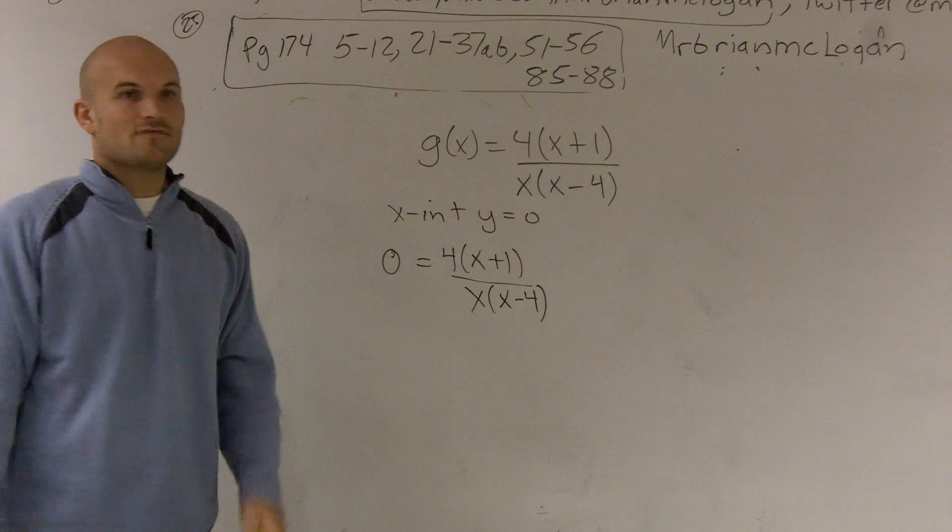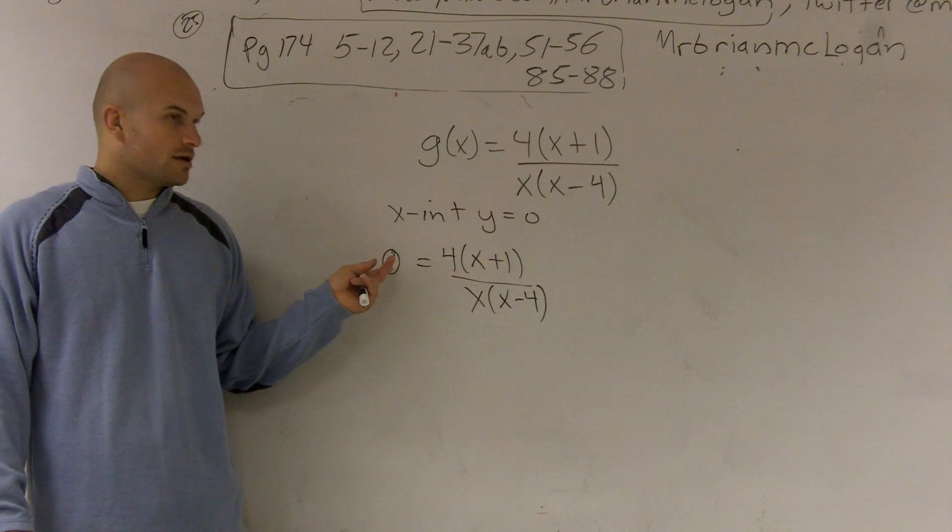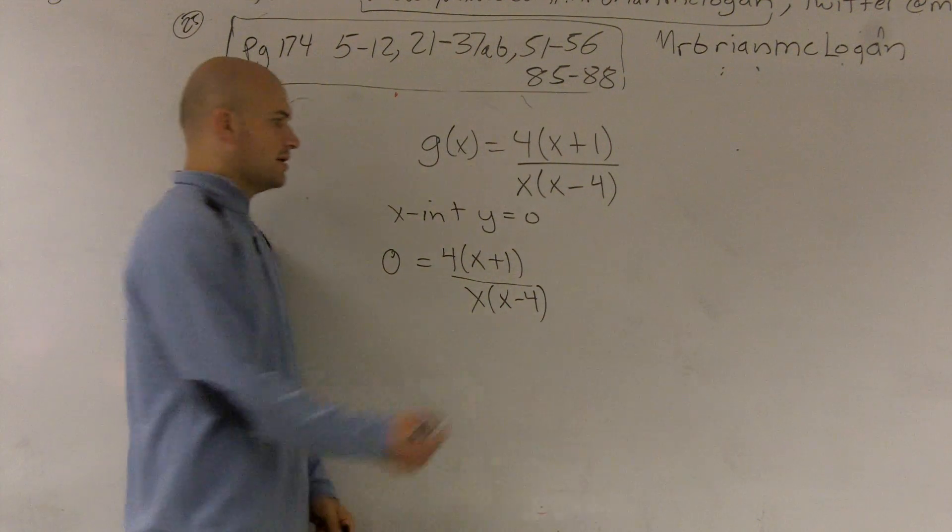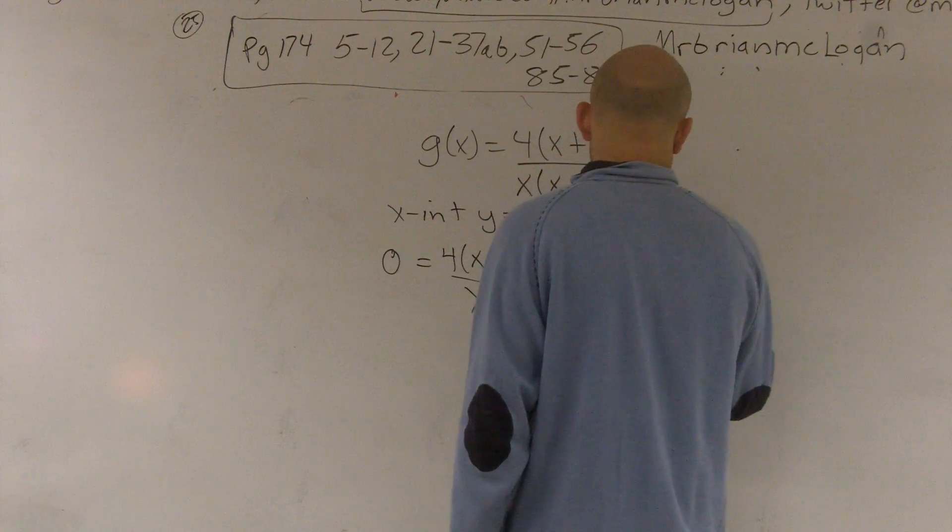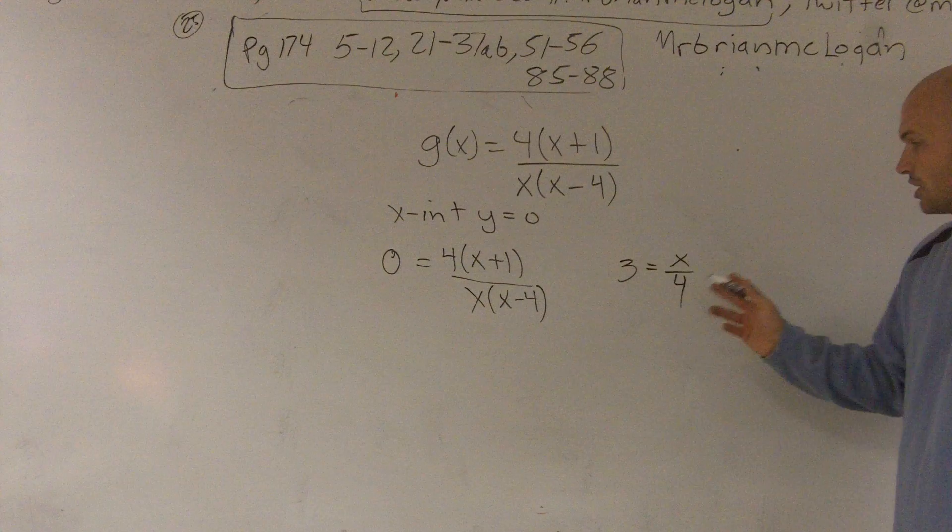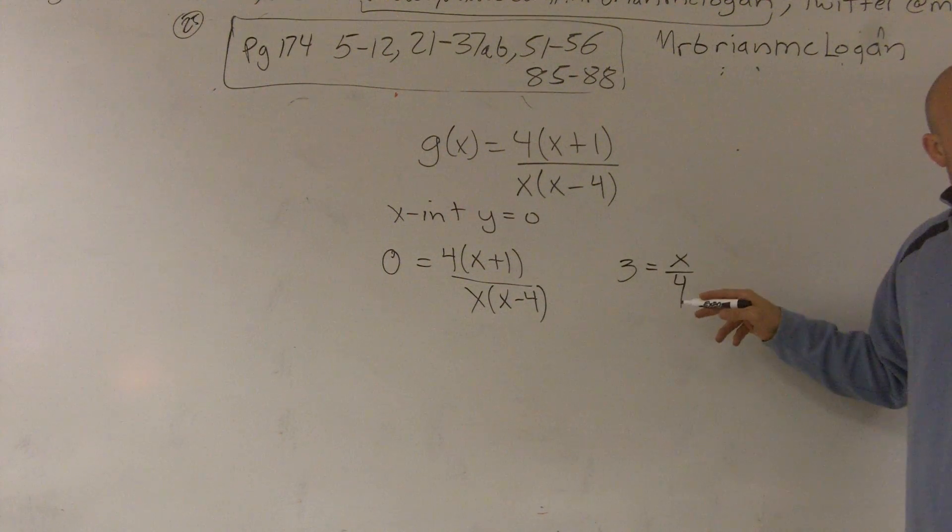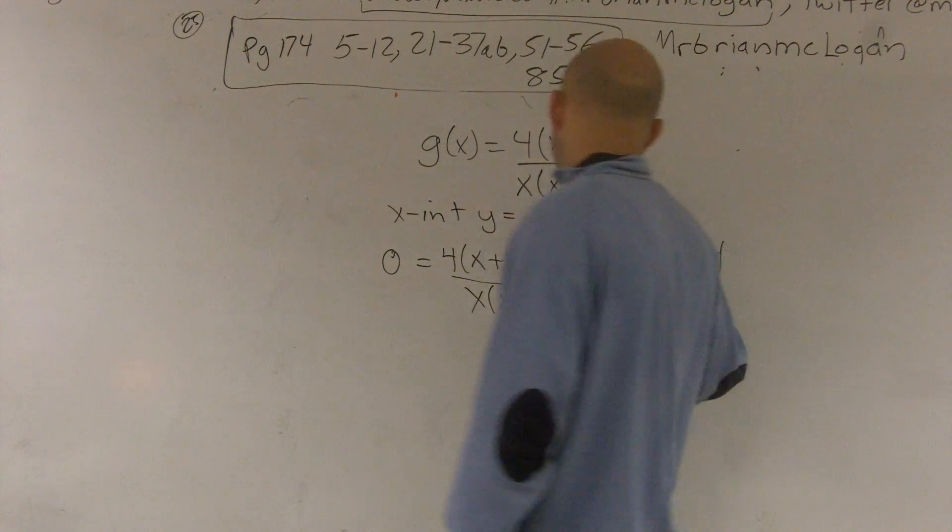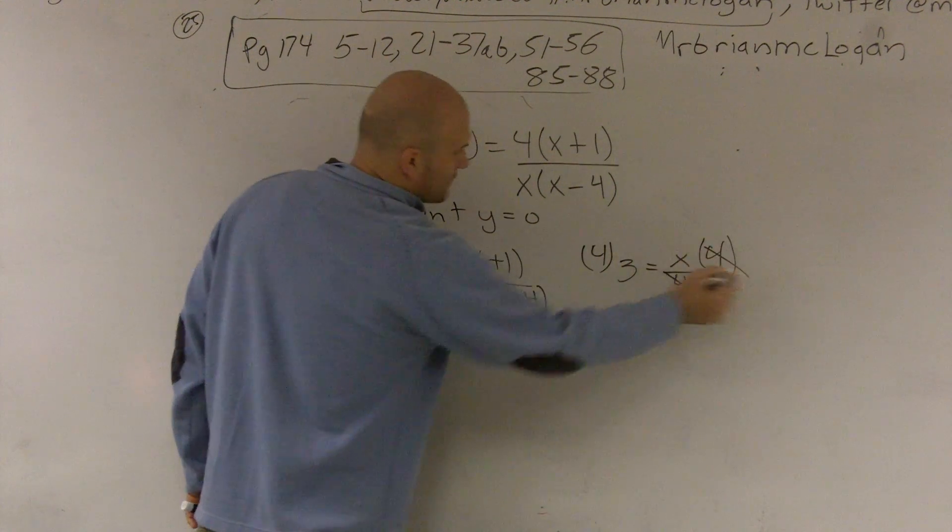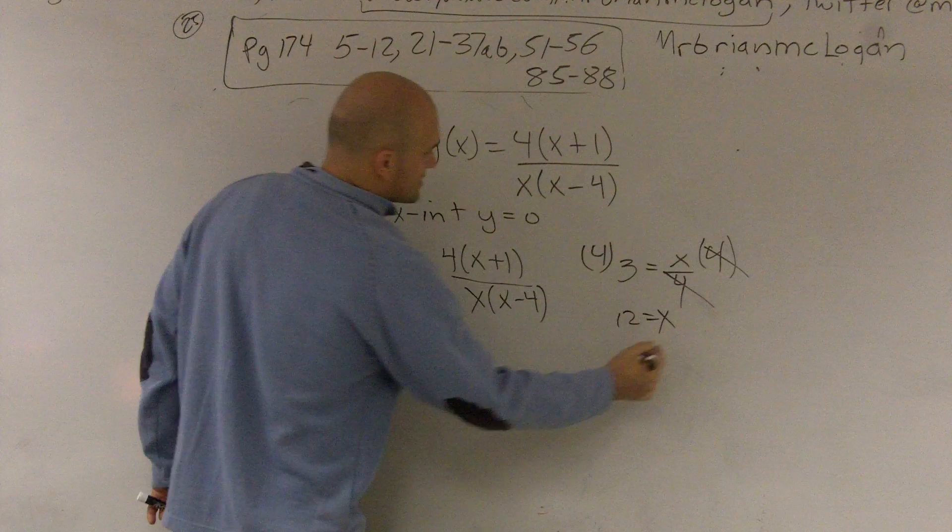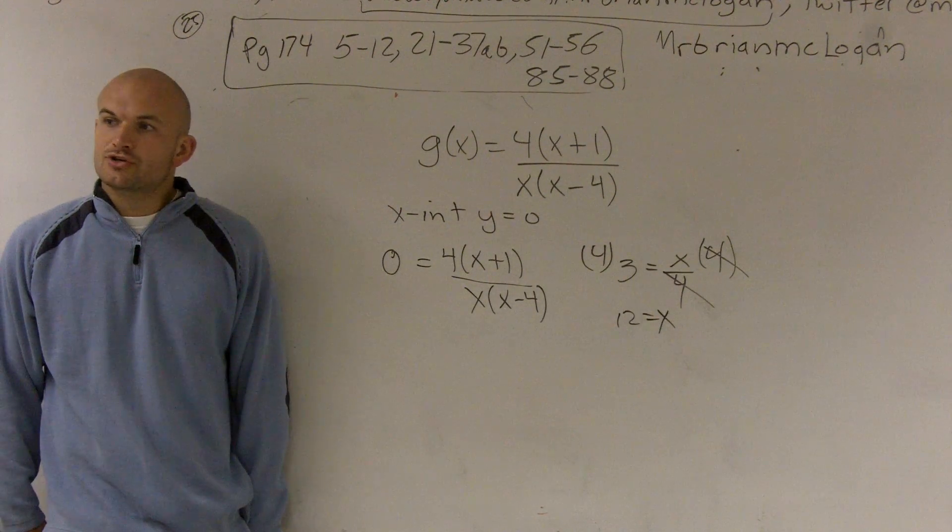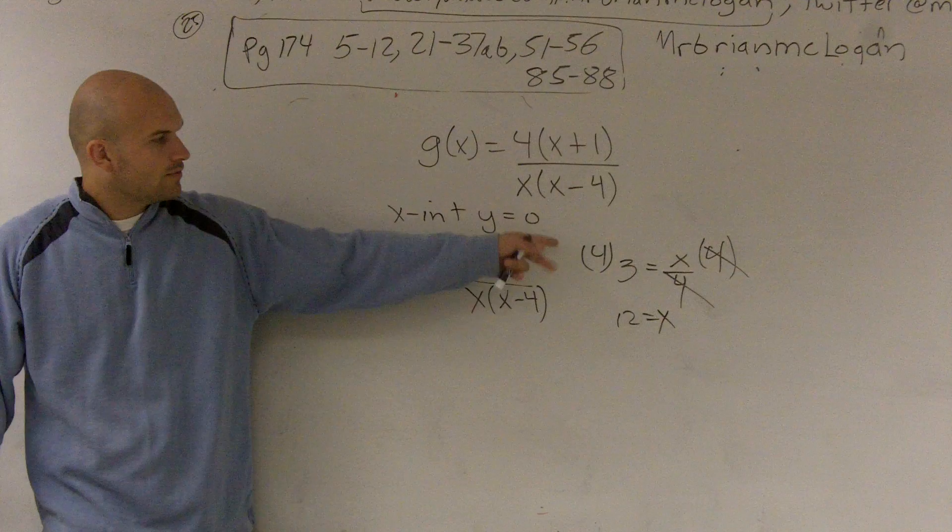So I need to find out for what values of x make this 0. Well, a lot of students forget that if I said 3 equals x over 4, how do you get rid of that 4? How do you solve for x? Well, you have to undo division of 4, right? So I'd have to multiply by 4 on both sides. And when you do that, those 4's cancel out, and you're left with 12 equals x.